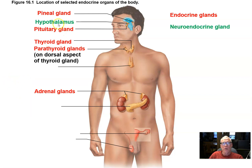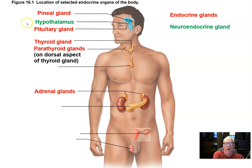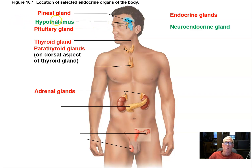The hypothalamus is a hugely important overseer of much of the endocrine system — at the top of a hierarchy of command. It's considered a neuroendocrine gland because a bunch of nuclei of the hypothalamus have axons whose terminals release chemical signals into the blood, and so in that regard the hypothalamus becomes an endocrine gland with an endocrine function.